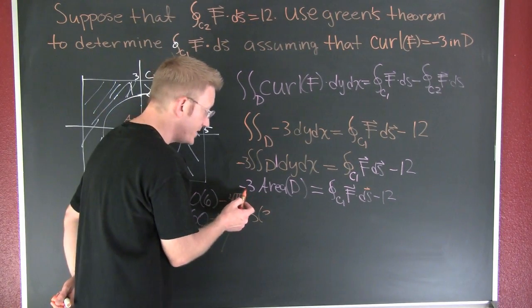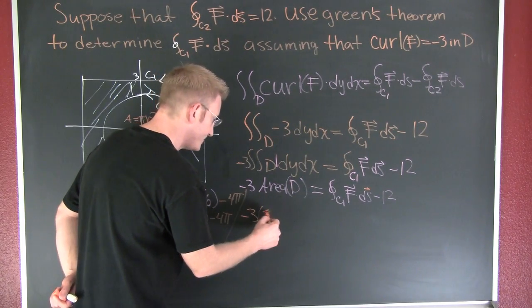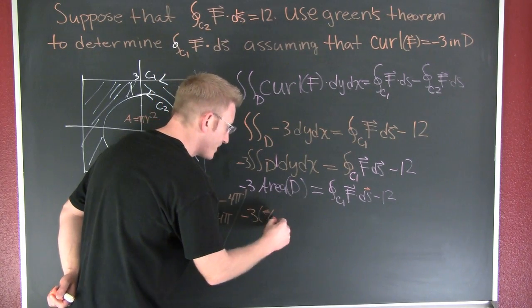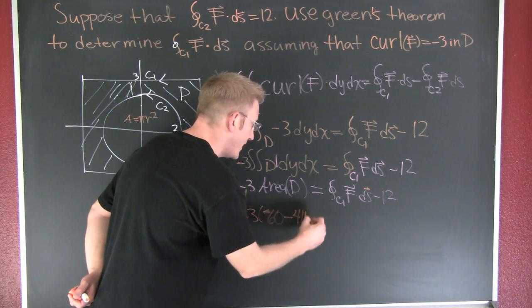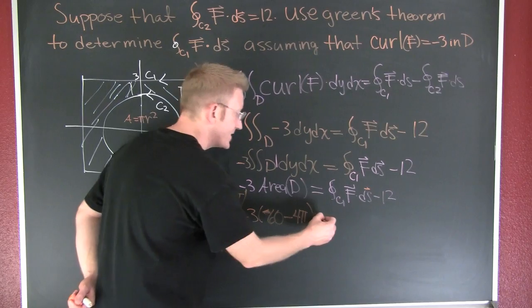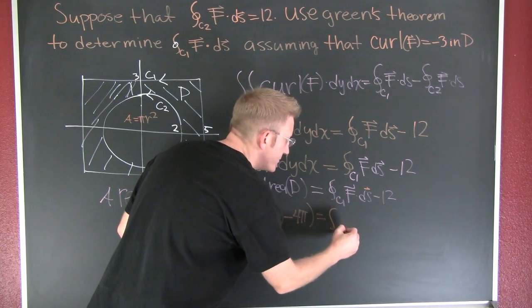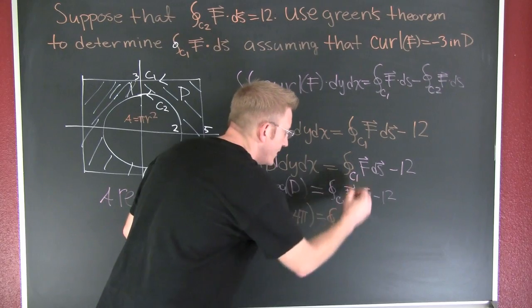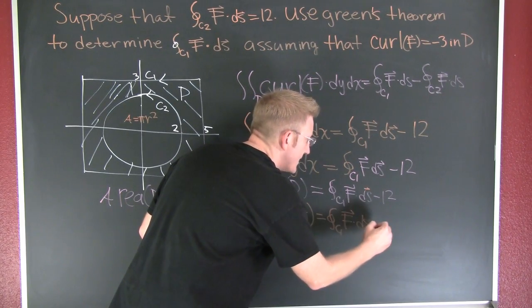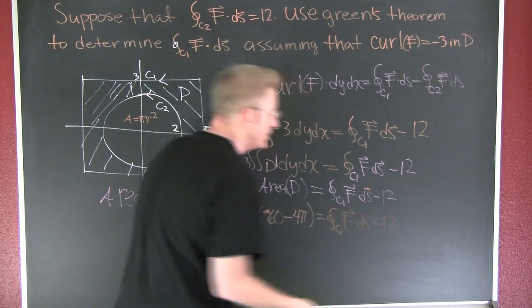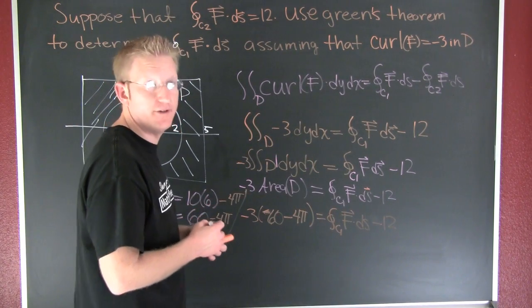So in here, I'm going to take 3 and I'm going to multiply it by 60 minus 4 pi. And then that's going to equal my integral around my closed path F dot dS minus 12. Great. I'm almost done.